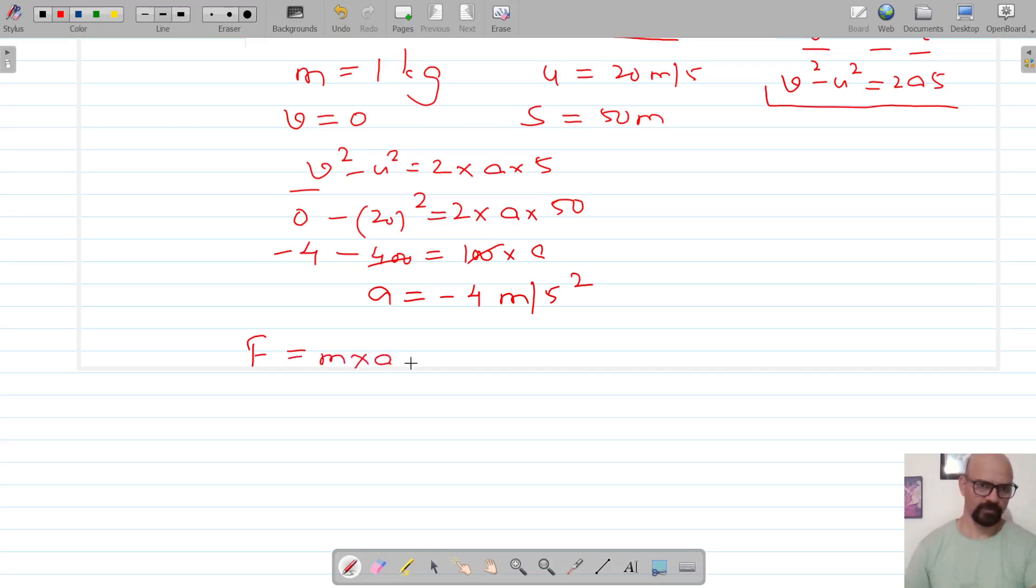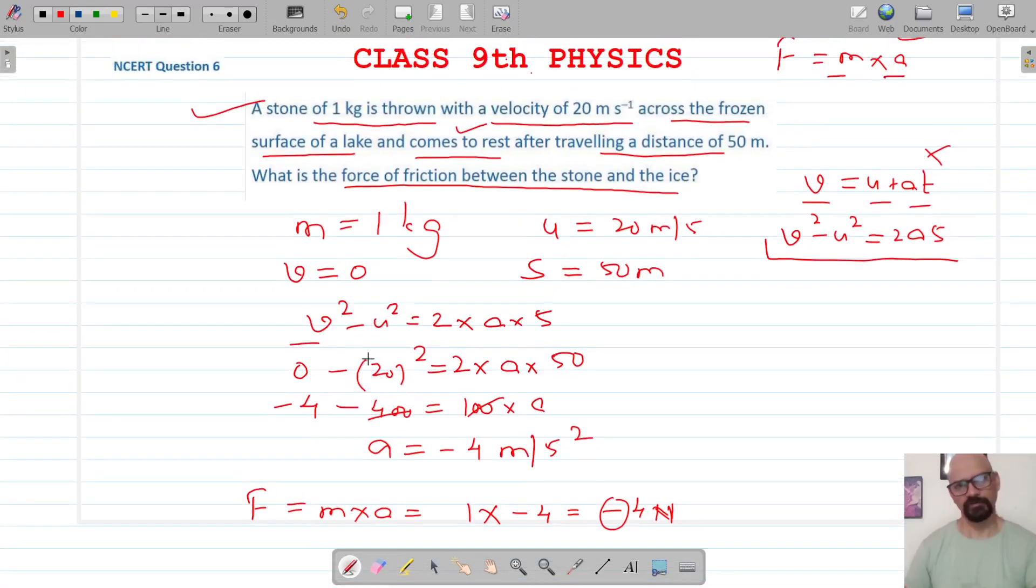So the force of friction is mass into acceleration. Mass is 1 kg, acceleration is negative 4, so this is negative 4 Newtons. The negative sign here indicates that the force of friction is opposite to the direction in which the stone is going.